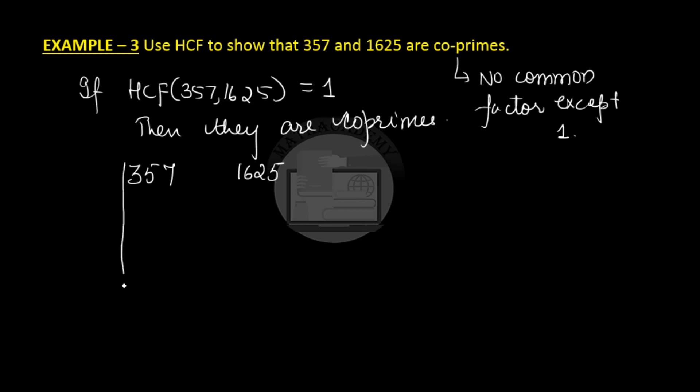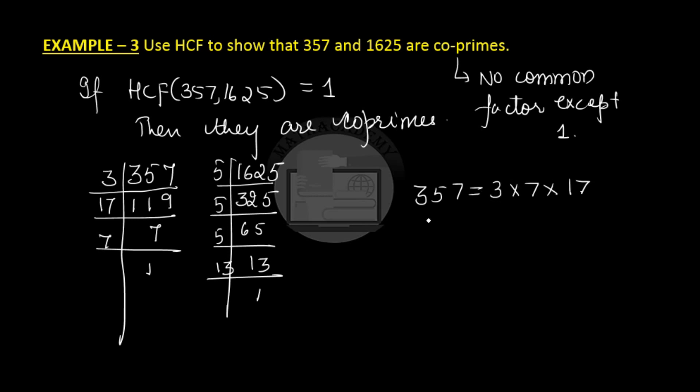I will use prime factorization method here. So this divides by 3, 119 times, then 17 goes 7 times and 7 goes one time. Prime factorize 1625: 325, 65, 13, 1.